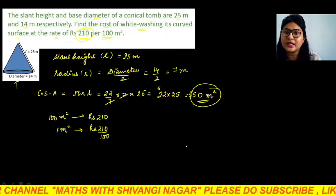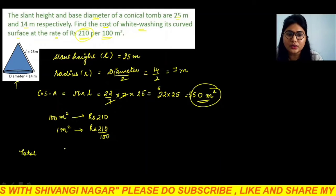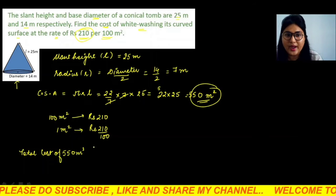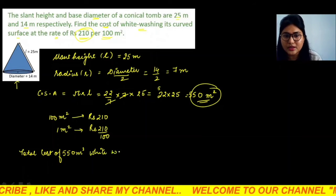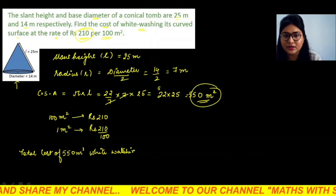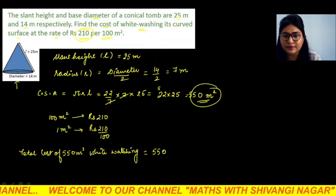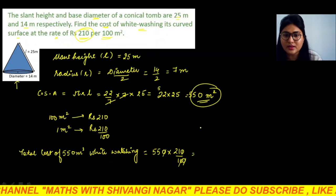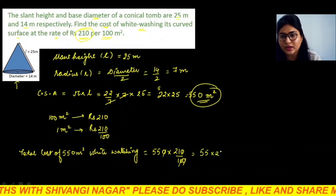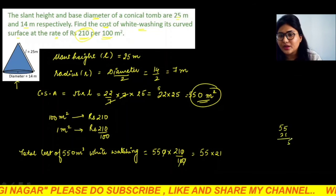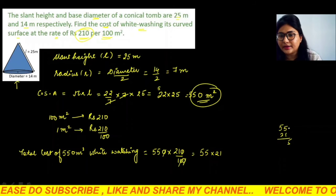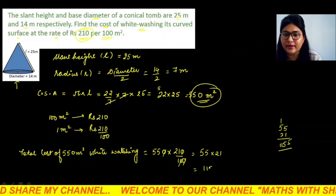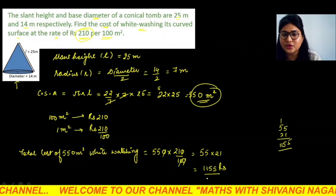Hume kitne meter square ki cost nikalni hai? 550 ki. So total cost of 550 meter square whitewashing is what? It is just multiply it with the per meter square cost. So 550 into 210 upon 100. 1 zero se 1 zero cancel, 1 zero se 1 zero cancel. So what we have? 55 into 21. So 5 times 1 is 5 and 10, 15 carry over 1, 5 times 2 is 10 and 11. So what we have? We have here 1155 rupees. So this is our total cost. So this is what all about in this question.